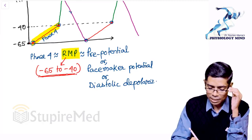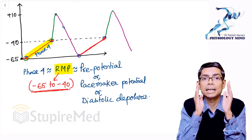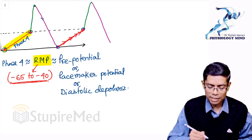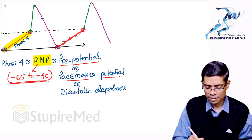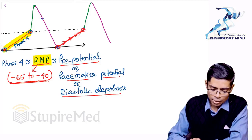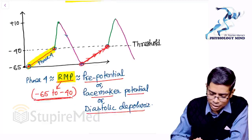Because the RMP of nodal tissue is not fixed and spontaneously moves from minus 65 to minus 40 millivolts, the nodal tissue behaves like a pacemaker tissue. This spontaneous movement of the membrane voltage is called the pacemaker potential, pre-potential, RMP, or diastolic depolarization. When the membrane voltage reaches minus 40 millivolts, that is the threshold voltage of nodal tissue.